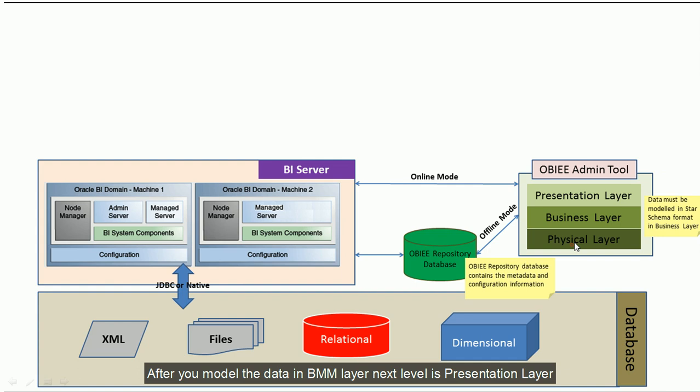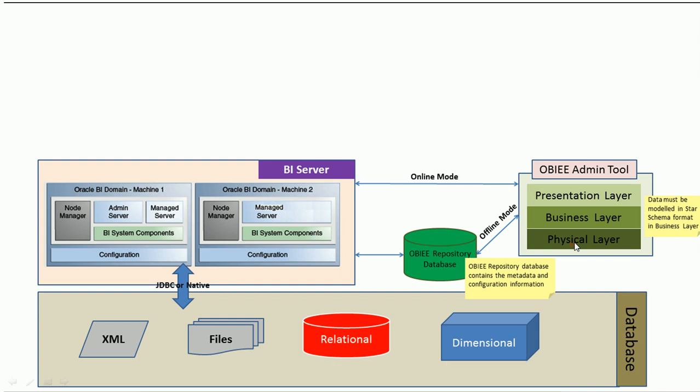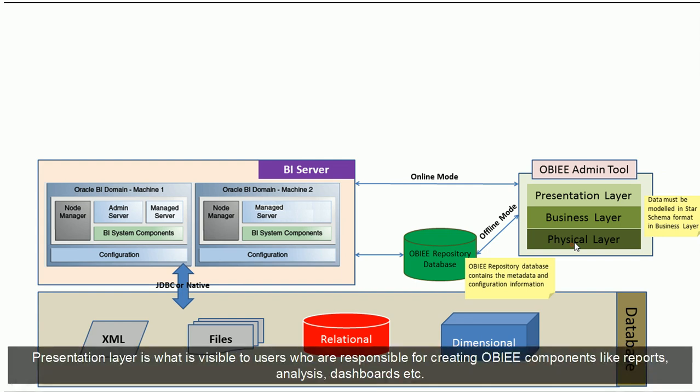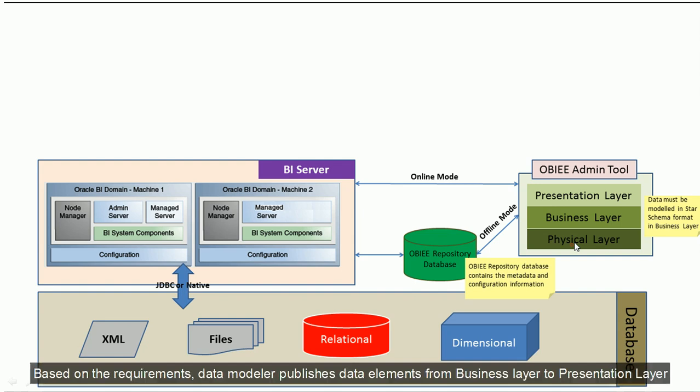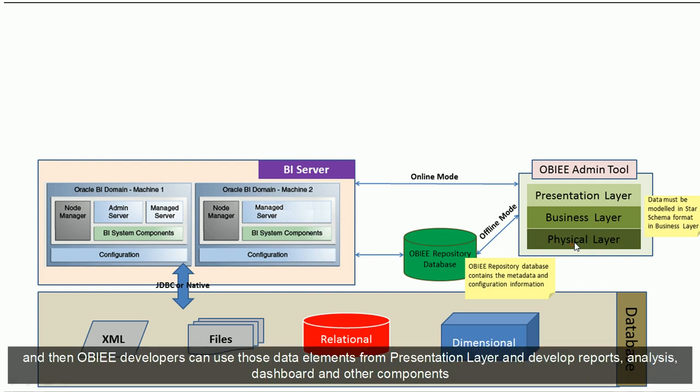After you model your data, the next layer is the presentation layer. The presentation layer is what is visible to OBIEE users who are responsible for creating OBIEE components like reports, dashboards, and more. Based on requirements, the data modeler publishes data elements from the business layer to the presentation layer, and then OBIEE developers can use those elements to develop reports, dashboards, and other components.